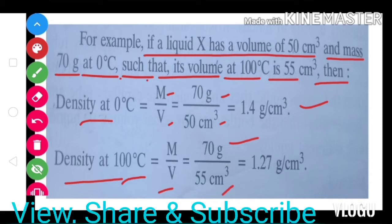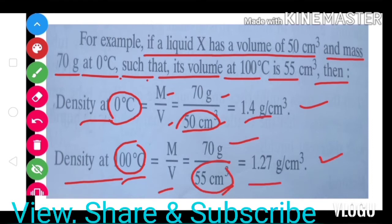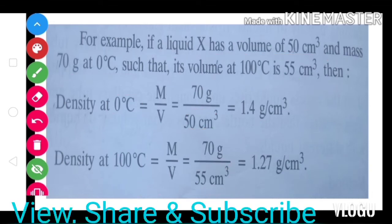You see what happened here? On increasing the temperature from 0°C to 100°C, the volume also increased - from 50 cm³ to 55 cm³. But the density decreased from 1.4 to 1.27. So what we learned from this today: